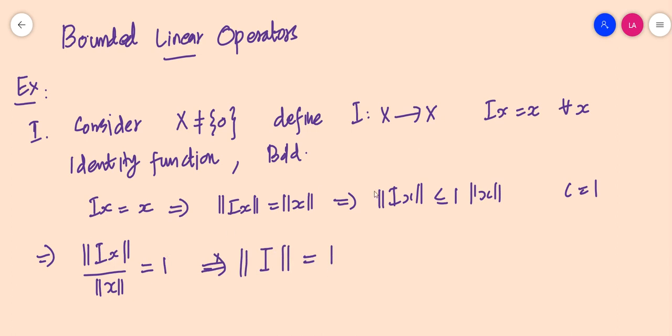Therefore, the identity operator defined on any normed space other than {0} is always a bounded linear operator with c = 1.